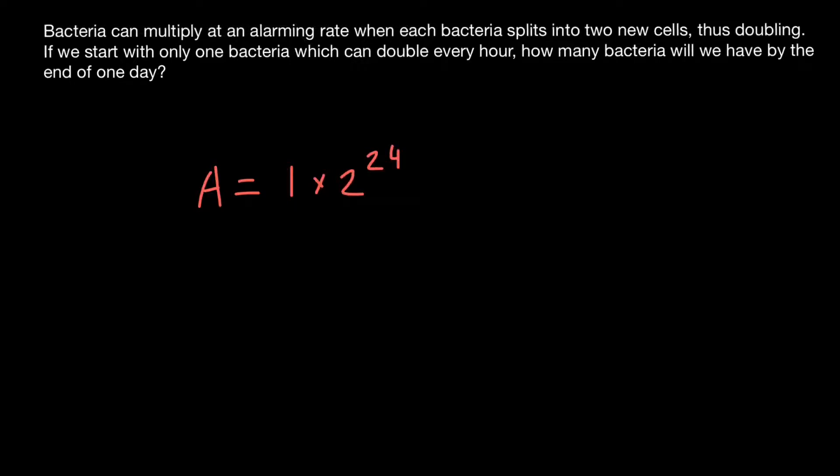And one here stands for the initial number of bacteria. We start with one bacteria. So if we would have, for example, 20 bacteria, we would put 20 here, or 300 bacteria, we would put 300 here. And two here stands for the doubling.